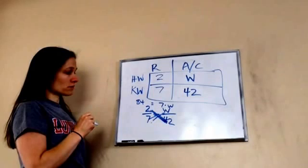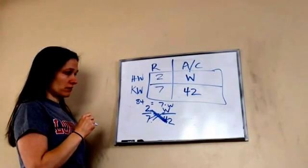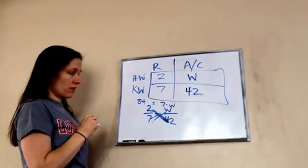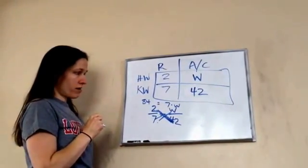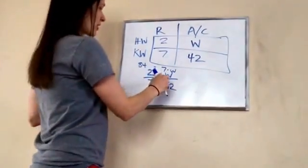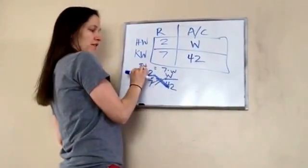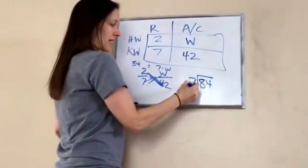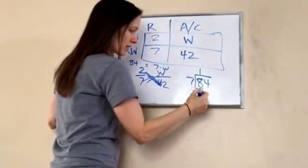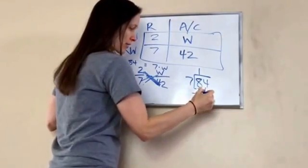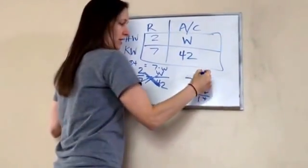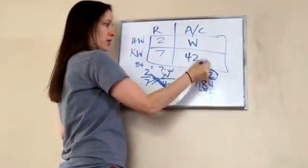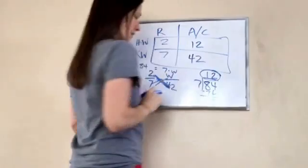So, now how am I going to do this? What we're going to do is we're going to say 7 times what equals 84. Well, what that means I need to do is go 84 divided by 7. And 7 goes into 8 one time. Subtract. Bring down my 4. 7 times what equals 14? 2. And then that comes out even. So, I know that W is 12.